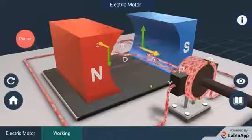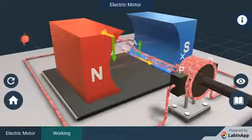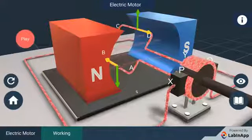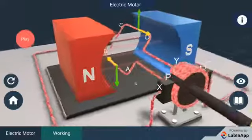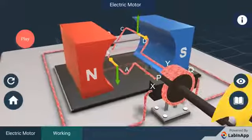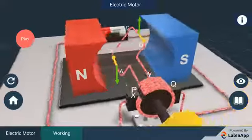we find that the force acting on arm AB pushes it downwards while the force acting on arm CD pushes it upwards. Thus, the coil mounted free to turn about an axis rotates anti-clockwise.